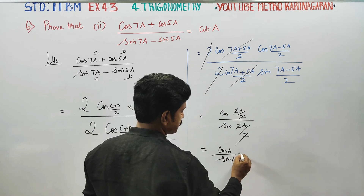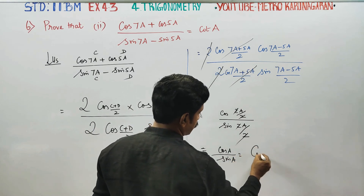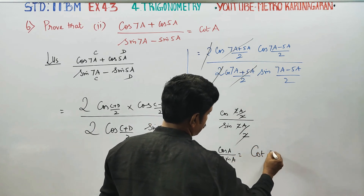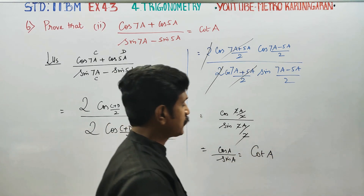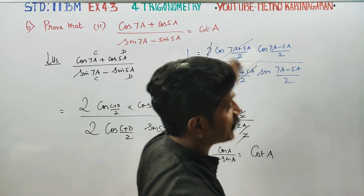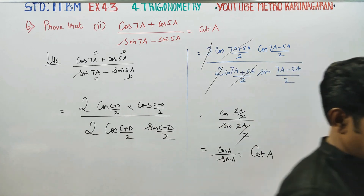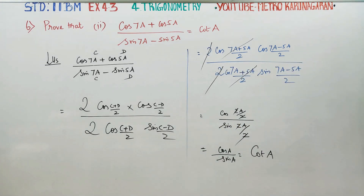Cos A by sin A equals cot A. Hence proved. Thank you.